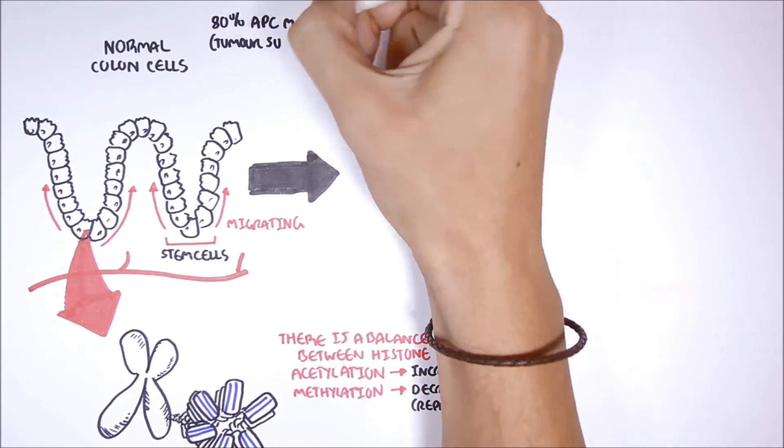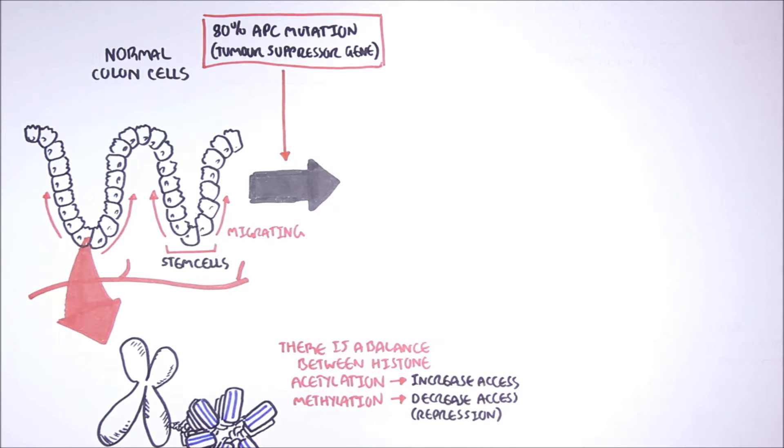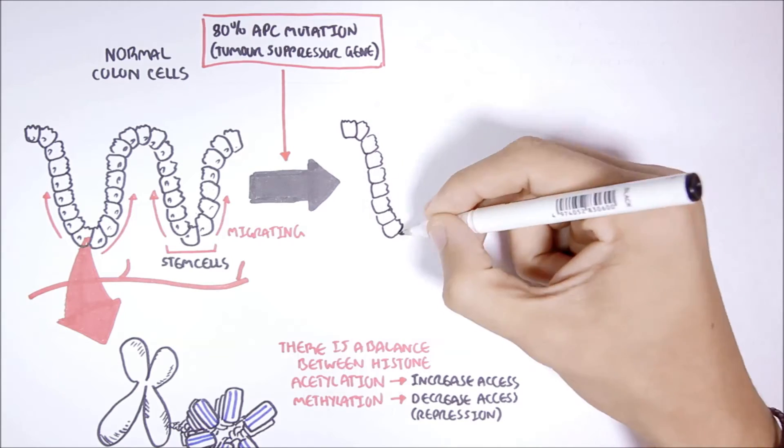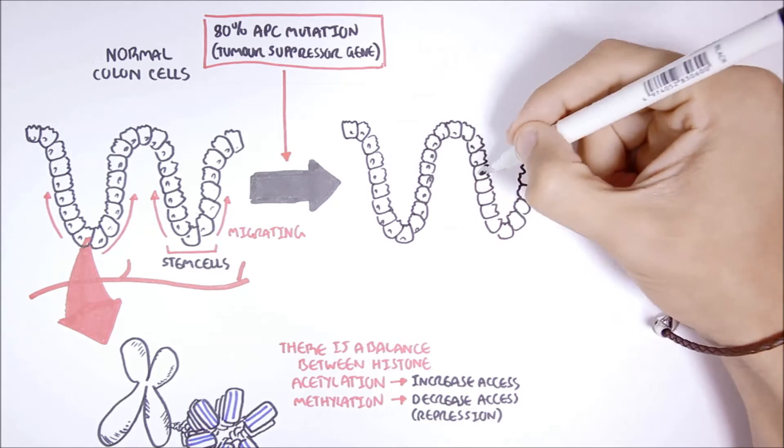Now, in 80% of cases of colon carcinogenesis, there is an adenomatous polyposis chole gene mutation, or APC gene mutation. The APC gene is essentially a tumor suppressor gene, because normally it encodes for proteins involved in cell adhesion and transcription. This APC gene mutation can result in one of these stem cells to become potentially cancerous.